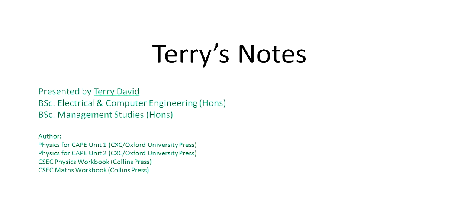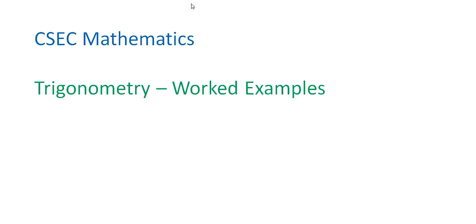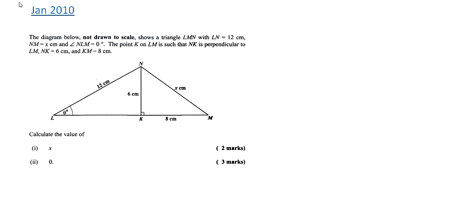Welcome to another episode of Terry's Notes. Today we are going to be looking at some worked examples in trigonometry. Whenever you are given a question involving triangles, you need to determine whether to use the sine ratio, cosine ratio, the tangent ratio, or the sine rule, or the cosine rule, or Pythagoras's theorem.